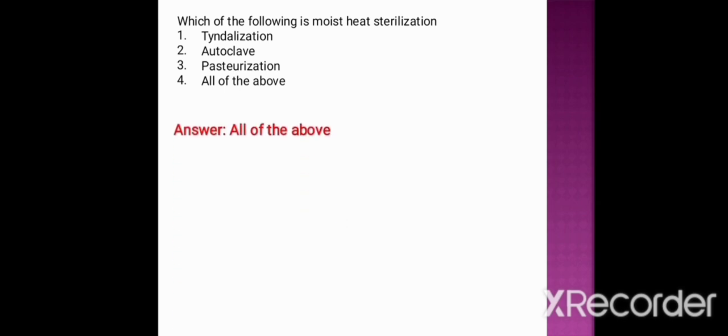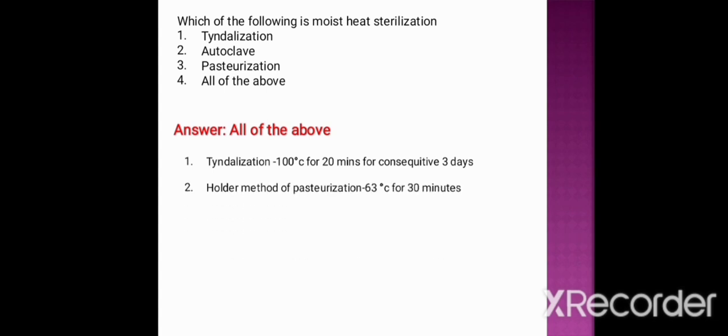Next question: which of the following is moist heat sterilization? Option one: tindalization. Option two: autoclave. Option three: pasteurization. Option four: all of the above. The correct option is all of the above — tindalization, autoclave, and pasteurization are all examples of moist heat sterilization. Another example is inspissation, which we will discuss later. Tindalization is done at 100 degrees centigrade for 20 minutes for three consecutive days.